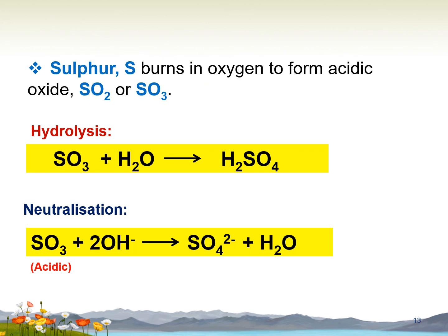Sulfur burns in oxygen to form two types of oxide: sulfur dioxide SO₂ and sulfur trioxide SO₃. The hydrolysis of sulfur trioxide with water produces sulfuric acid H₂SO₄, while the neutralization of sulfur trioxide with OH⁻ produces sulfate ion SO₄²⁻ and water molecule.